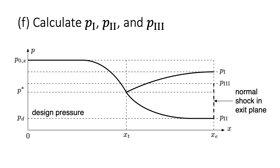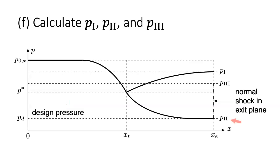For Part F, we calculate the pressures corresponding to states 1, 2, and 3 as defined in lecture. For state 1, the flow expands to sonic velocity at the throat and returns to subsonic velocity isentropically at a pressure above the critical pressure. For state 2, the flow expands to sonic velocity at the throat and continues to expand isentropically to supersonic velocity at a pressure below the critical pressure — this is also called the design pressure. For state 3, the flow expands isentropically to the pressure at state 2, then experiences a normal shock in the exit plane, exiting subsonically at a pressure above the critical pressure but below state 1.